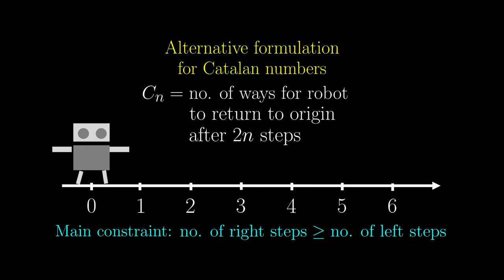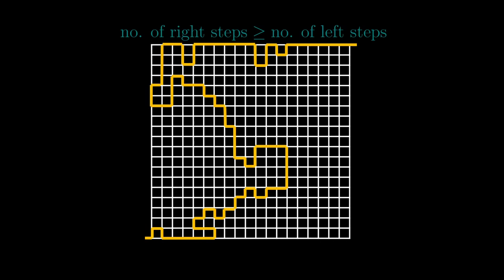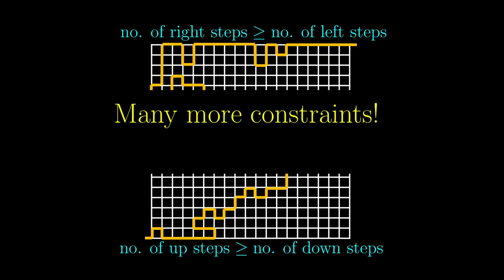This problem has some sort of constraint, in the sense that the number of right steps must be at least the number of left steps. In the maze problem, we can also say that the number of right steps must be at least the number of left steps, and also the number of up steps must be at least the number of down steps.